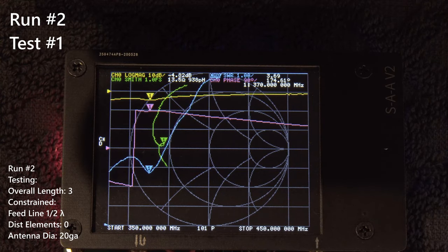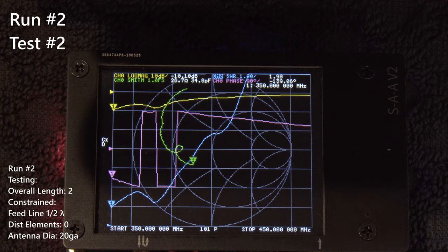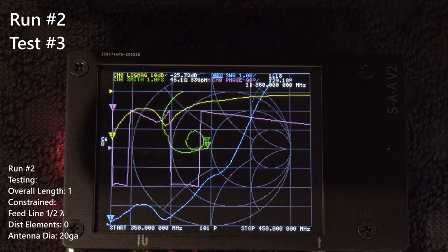In run number two, we are using a new length of wire but duplicating the test, so we can at least identify outliers in the data from me soldering it improperly or any other oddities of the world. If you want to take a look at these in more detail, check out the Google spreadsheet in the description below.